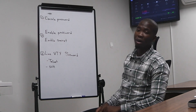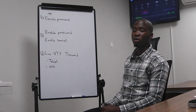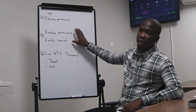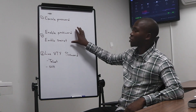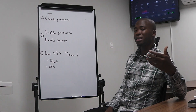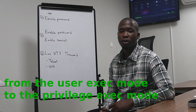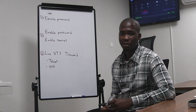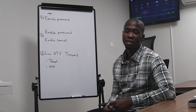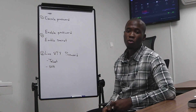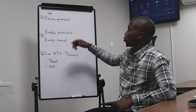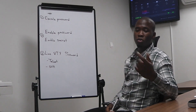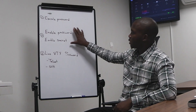The console password and the line VTY passwords are configured to restrict people when logging into the device. The enable secret and enable password, instead of restricting login, are configured to restrict someone from moving from the user EXEC mode to the privilege EXEC mode. From privilege EXEC mode you can move to global configuration mode without restriction, so you want to put a restriction on that transition — that's what these two are useful for.